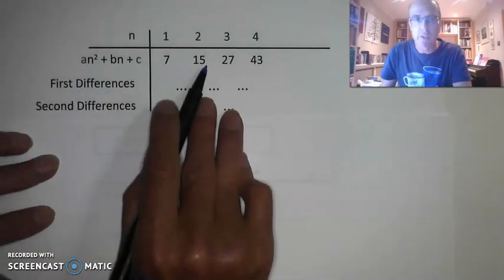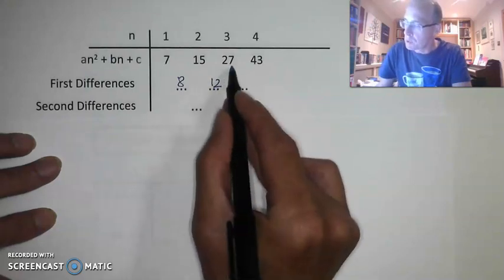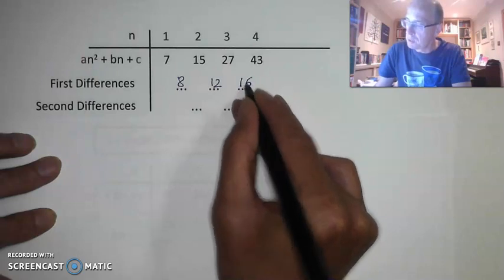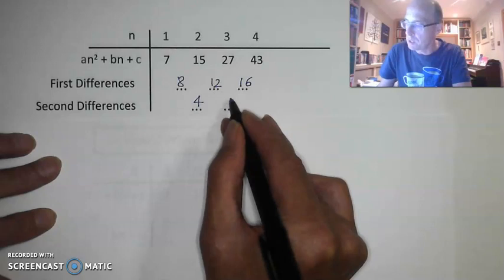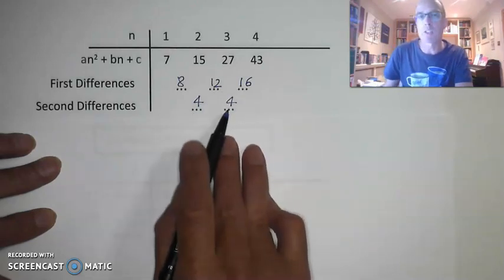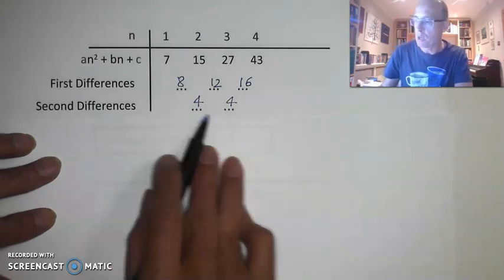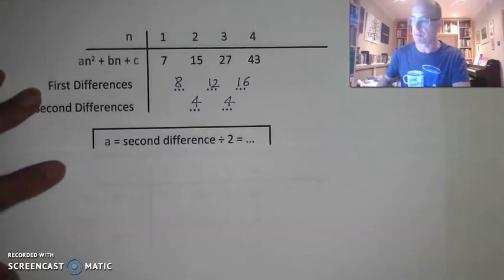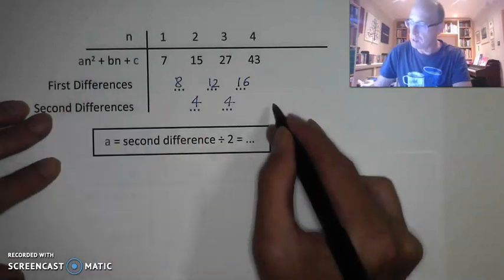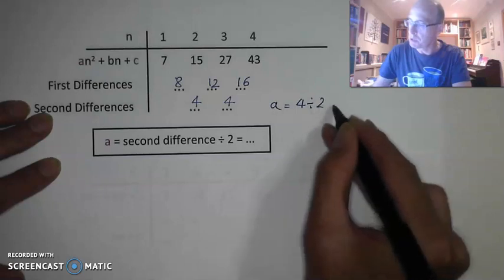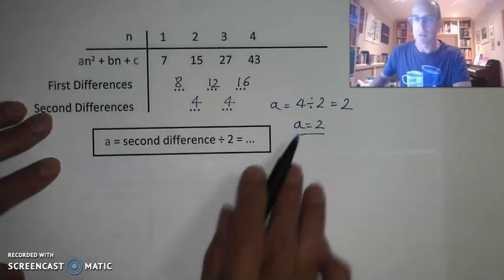Let's give it a go. The first differences of the sequence are: 15 minus 7 is 8, 27 minus 15 is 12, and 43 minus 27 is 16. The second differences are: 12 minus 8 is 4, and 16 minus 12 is also 4. For this to be a quadratic sequence the second differences need to be the same — and they are. So the second difference is 4, meaning a equals 4 divided by 2, which equals 2.